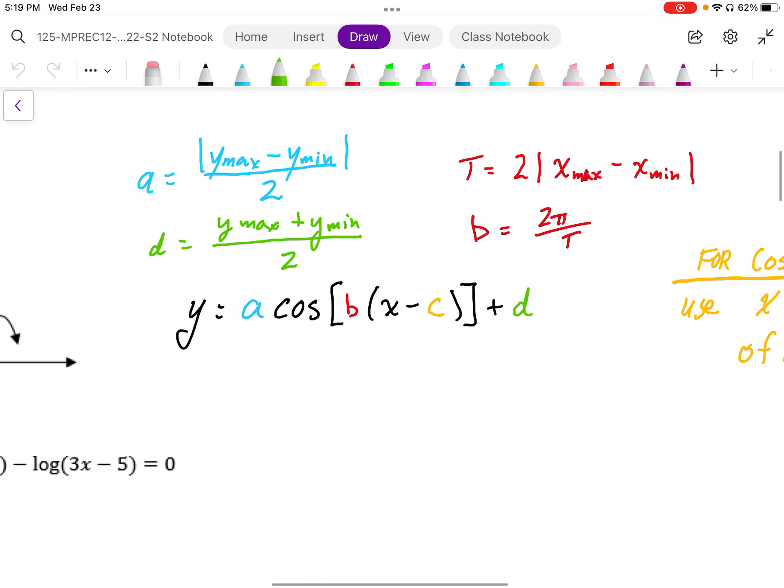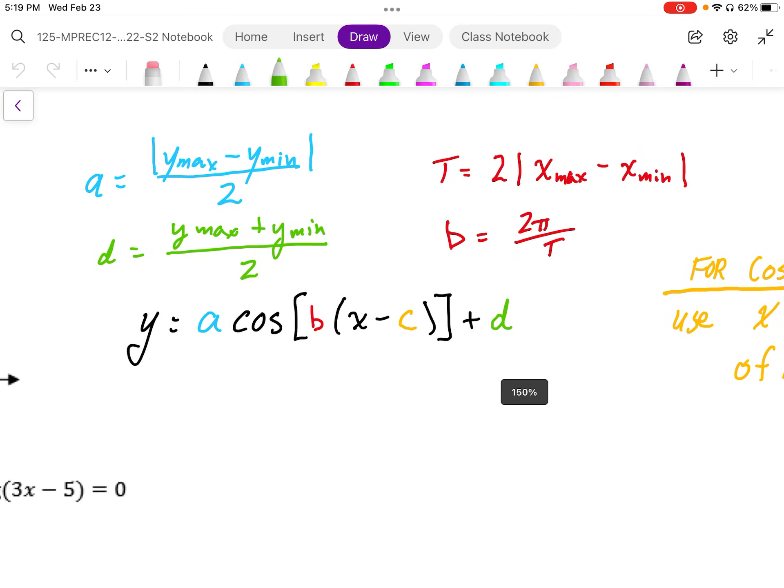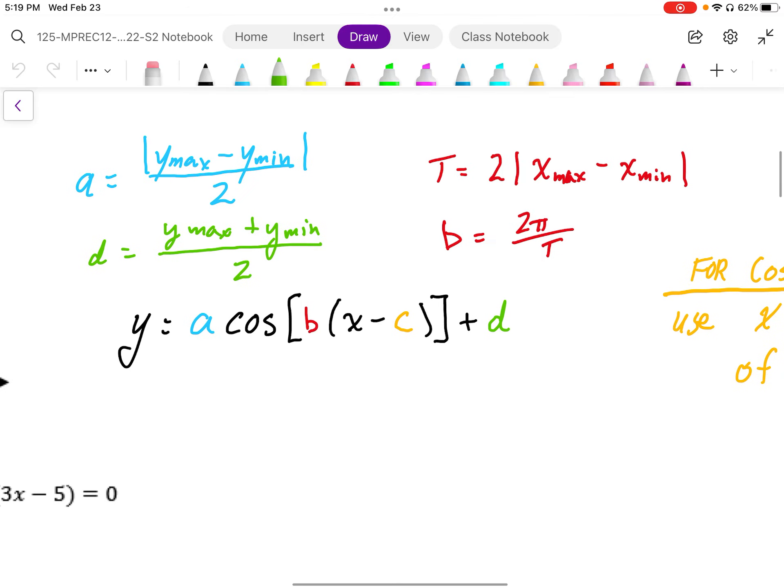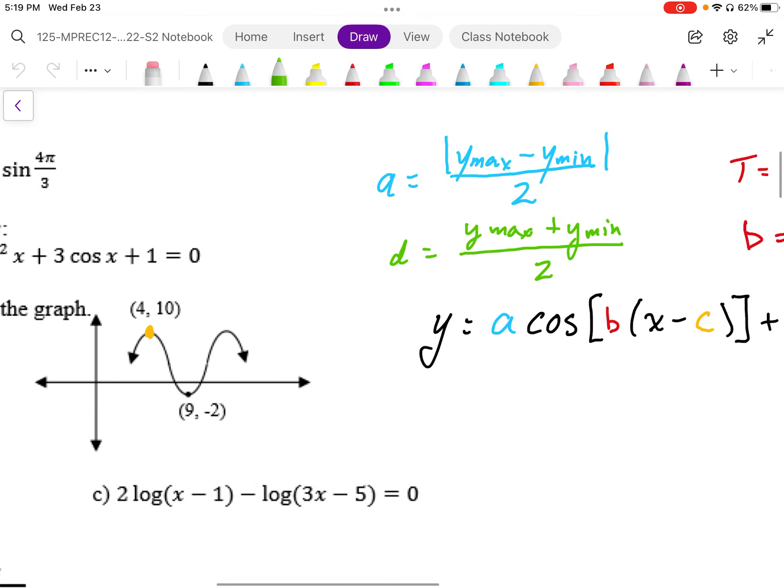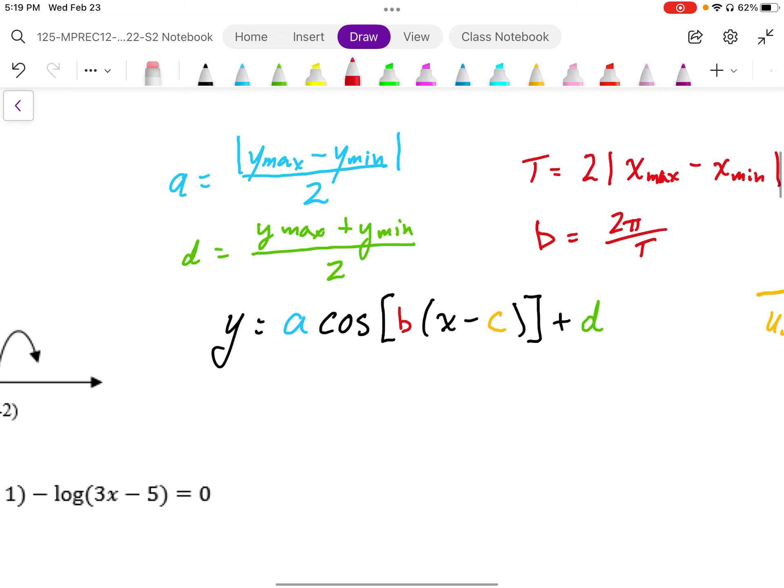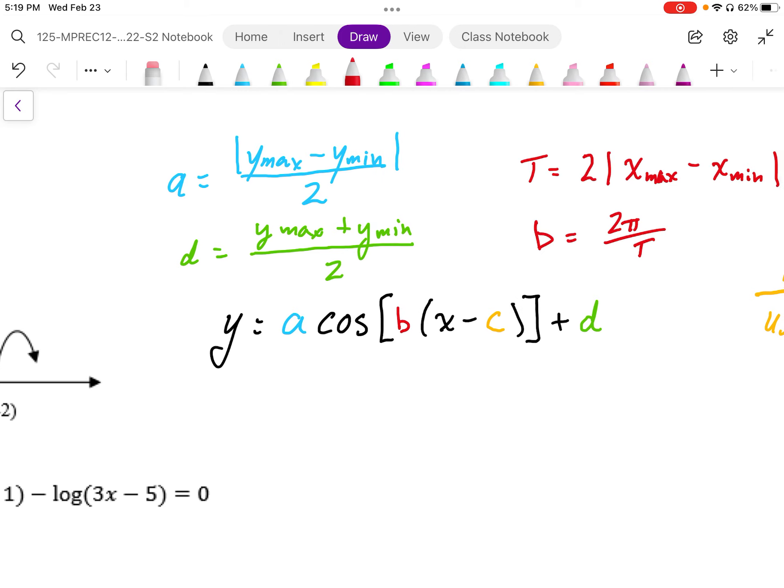And if we want to get the period, the period is the distance. So again, I'm going to subtract. So, I'm going to subtract the x coordinate of the max and min. And since that represents half the period, so this distance here only represents half the period from here to here. We're going to times that by two to get the period. And then to get the b value, we're going to divide by the t.